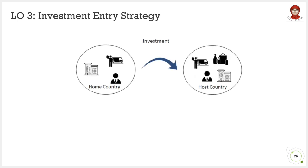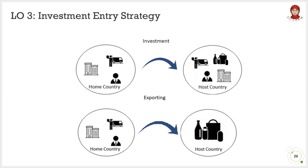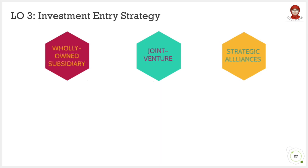Now we will be discussing the investment entry strategy. This strategy entails direct investment in plant and equipment in a foreign country, coupled with ongoing involvement in the local operation. Investment entry strategy is also commonly referred to as foreign direct investment, or FDI. This is the complete opposite of exporting — for exporting, all the plant and equipment remain in the home country and only the products are sold in the foreign country. There are three types under this strategy, which are wholly-owned subsidiary, joint venture, and strategic alliances.